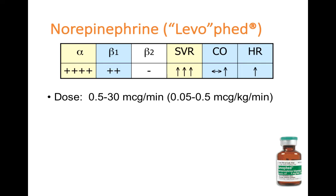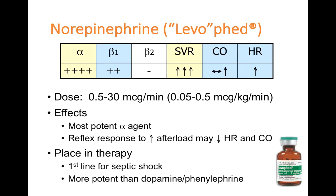Norepinephrine is dosed at 0.5 to 30 mcg/min (or 0.05 to 0.5 mcg/kg/min weight-based). As the most potent alpha agent, it can cause some variation in cardiac output due to reflex response — once the body clamps down and increases afterload, there may be a reflex decrease in heart rate and cardiac output. It has been shown more potent for constriction than dopamine and phenylephrine, which is why it's recommended as first-line for septic shock, where massive vasodilation from the inflammatory response is the main problem.